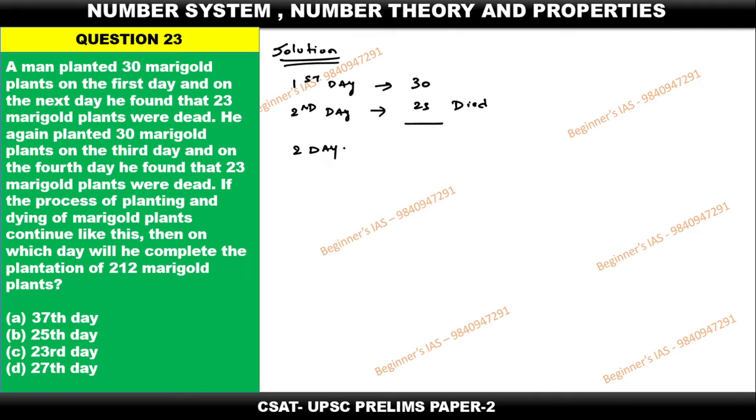Which means that on two days total, how much remaining? Seven remaining. So now with this logic, just move on with the options: 37th day, 25th day, 23rd day, and 27th day.